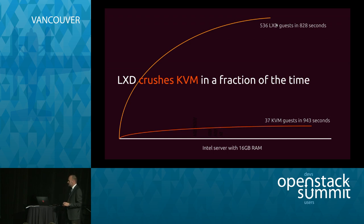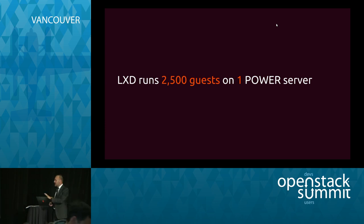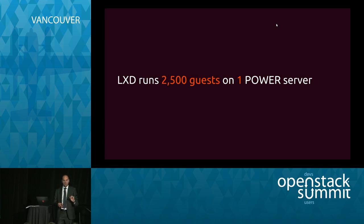The guys who did that work are all here — come and see us at the booth. It's a pretty extraordinary story. But if you really want to see the density, you've got to go to the high end. We were delighted to work with IBM on their new OpenPower servers to produce this number: 2,500 guests on a single OpenPower server. IBM is delighted with that. We're delighted with that. There's still lots of room to go.